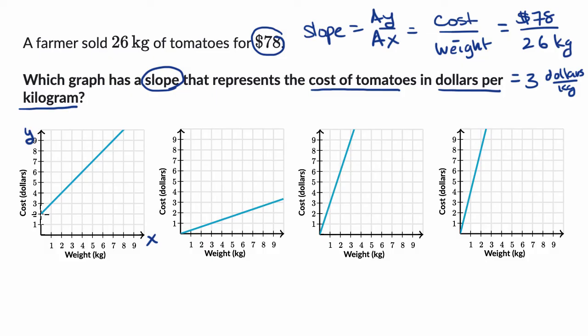This one clearly is not the case. When kilograms increase by one, dollars are increasing by one. So I'll rule this one out. This one, every time kilograms increase by one, dollars look like they're increasing by one third. So I'll rule this one out.